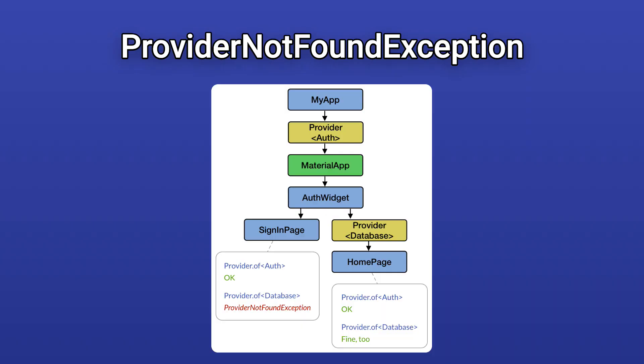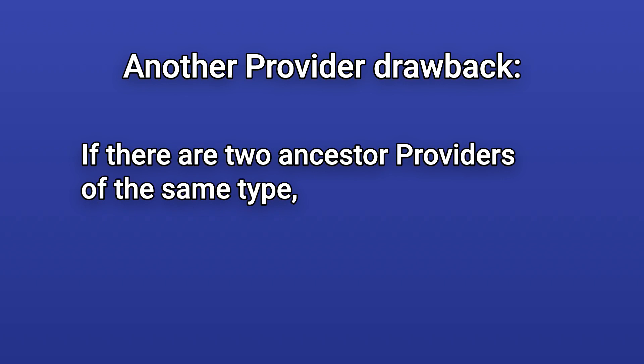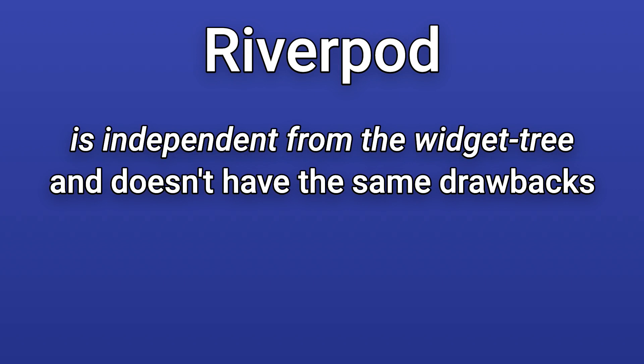Another drawback is that when we use provider, we can end up with runtime exceptions. Inside any widget class, we can access our providers by type with a certain syntax, but if we are not careful, we can end up with a provider-not-found exception at runtime — for example, where a sign-in page cannot find an ancestor provider of type database because it doesn't belong to the same widget subtree. Also, if there are two or more ancestor providers of the same type, we can only access the one closest to our widget. Riverpod is completely independent from the widget tree and doesn't suffer from any of these drawbacks.